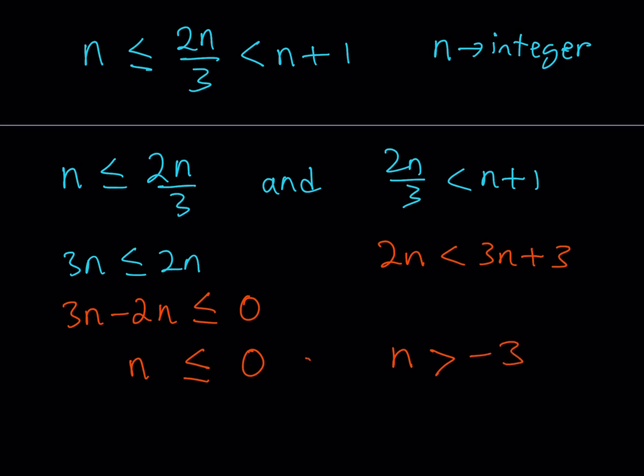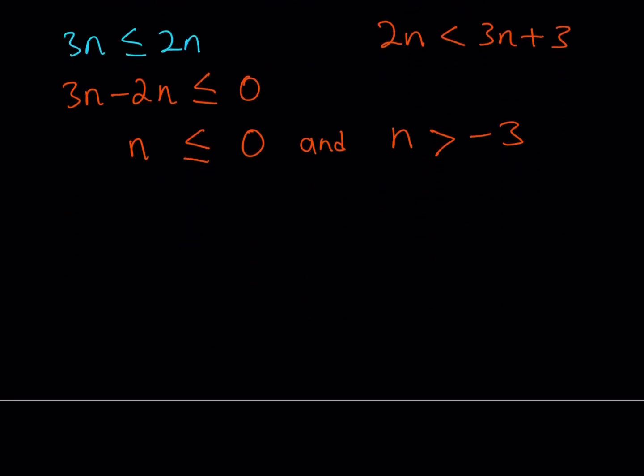But don't forget that these are connected with the word and, which means we're going to find the intersection. And if you look at the intersection of these two inequalities, you're basically getting something like this. n is greater than negative 3, but at the same time, less than or equal to 0. But remember, n is an integer. So, there are only a number of integers on this interval, and they are n equals negative 2, n equals negative 1, and n equals 0.